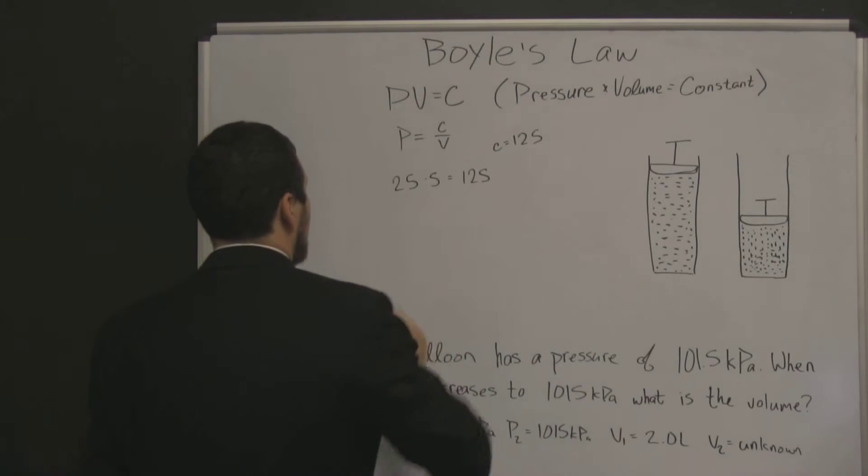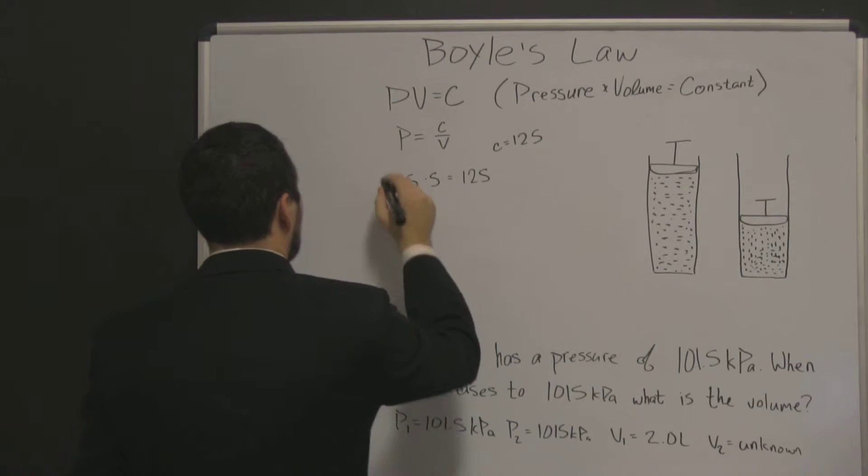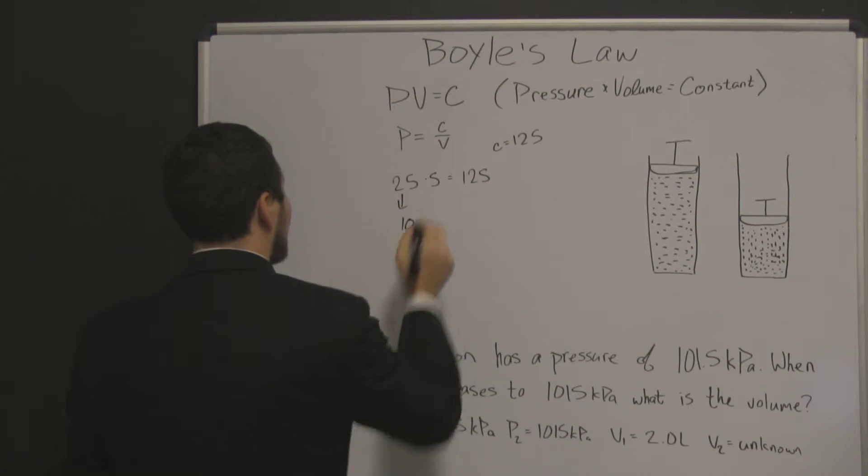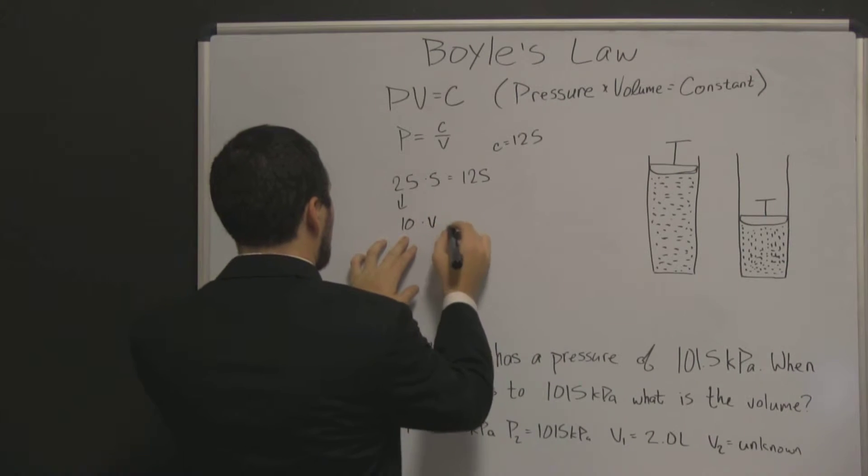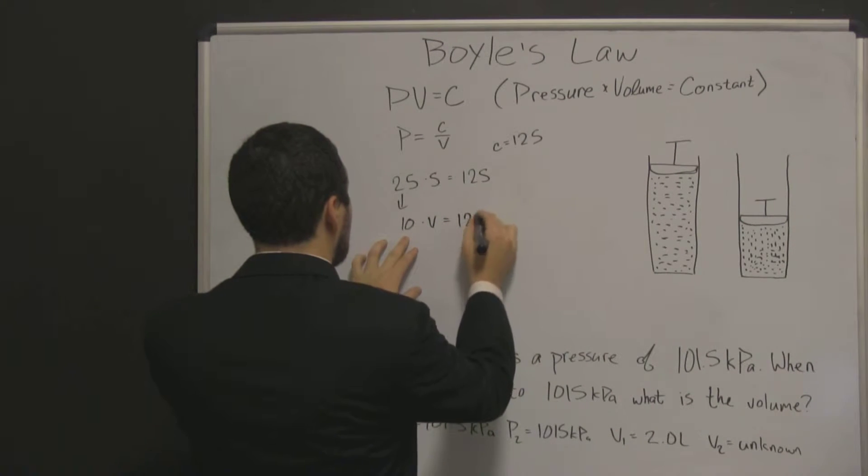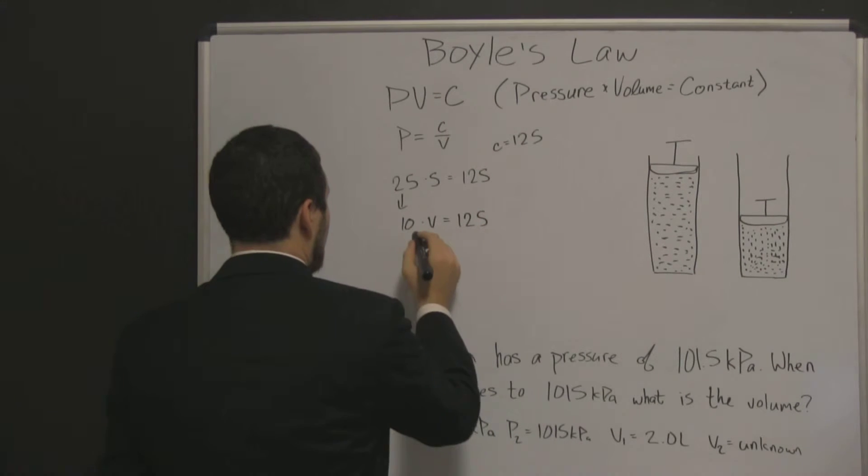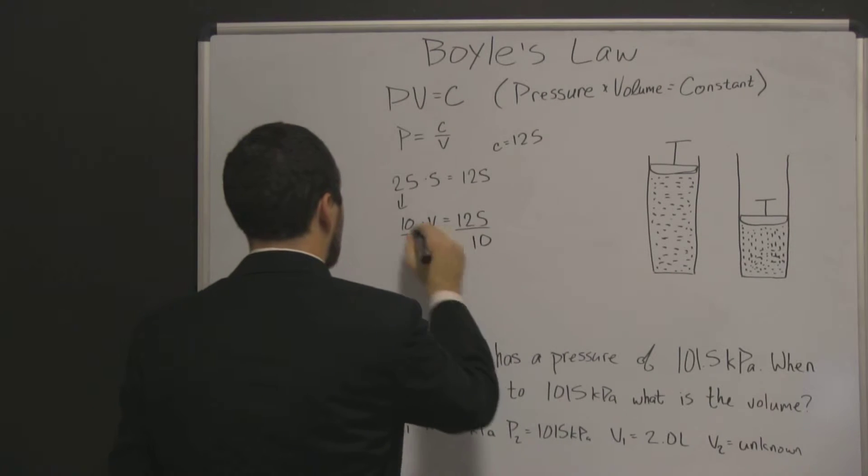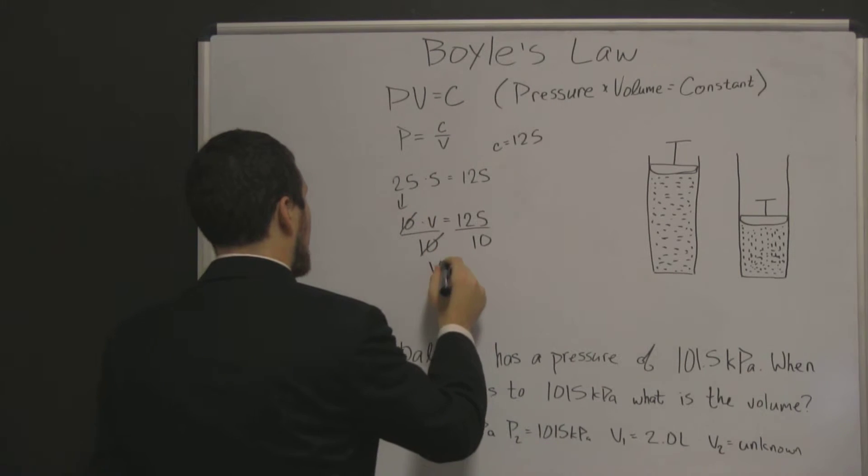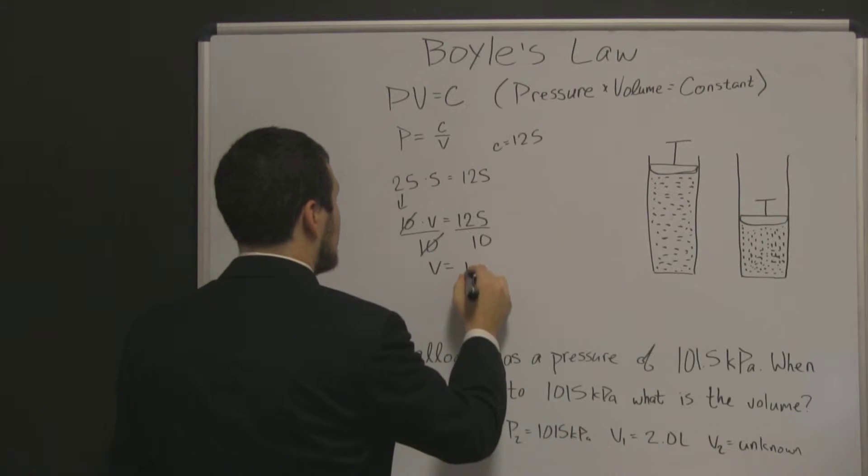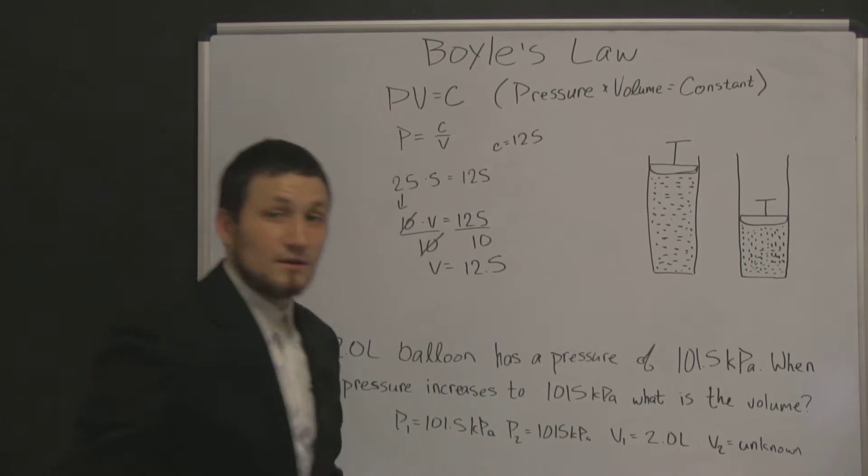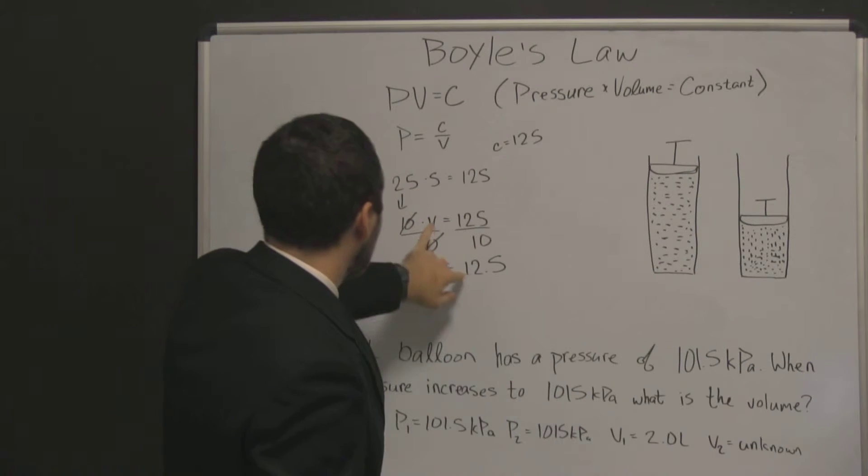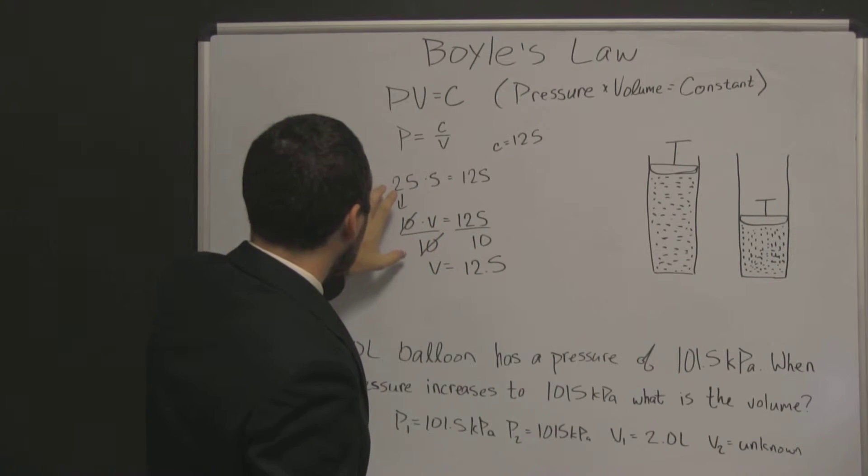In this case, if our pressure drops to say 10, well then we have 10 times our volume is equal to 125. Now if we use algebraic rules, we can divide both sides by 10, our 10's cancel, and we can figure out that our volume is equal to 12.5 liters instead of 5. So we see that increase in volume when our pressure decreased.